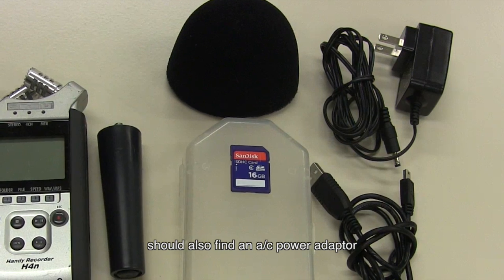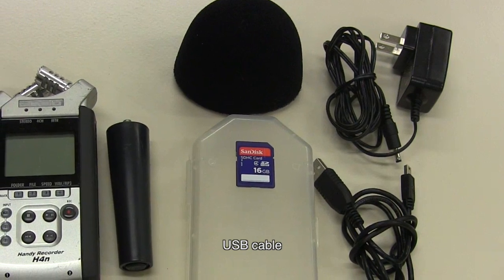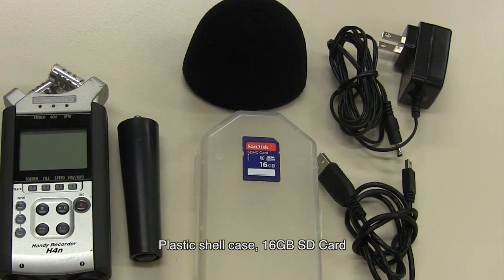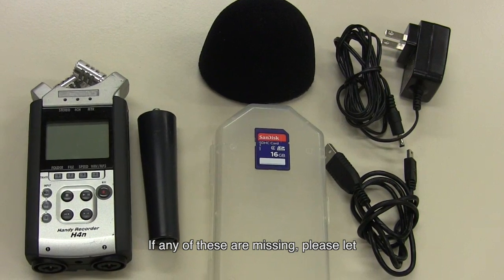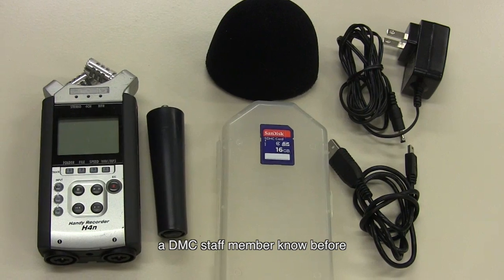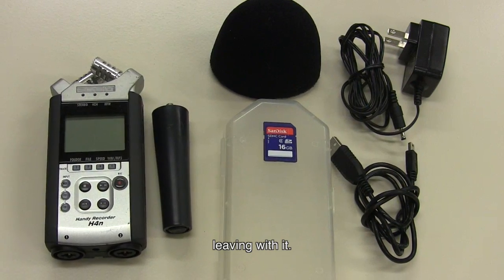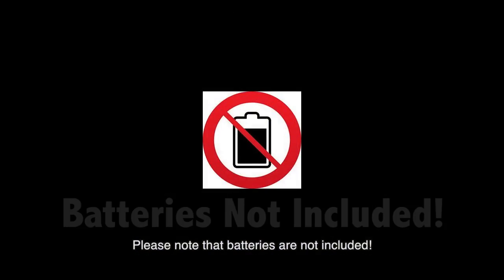Along with the recorder you should also find an AC power adapter, USB cable, windscreen, plastic shell 16GB SD card, and a removable handle. If any of these are missing, please let a DMC staff member know before leaving with it. Please note that batteries are not included. You must supply your own two AA batteries if you wish to not be tethered to an electrical socket.